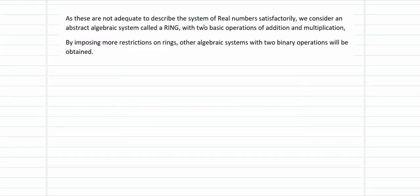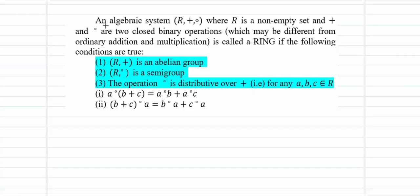In general, a system is not going to be sufficient with one binary operation. So we introduce two basic operations — one may be like addition and the other multiplication — in which case the algebraic structure is referred to as a ring. By imposing more restrictions on the ring, other algebraic structures with two binary operations can also be obtained. The formal definition uses an algebraic system (R, +, ·) where R is a non-empty set, + is one binary operation, and · is another binary operation.